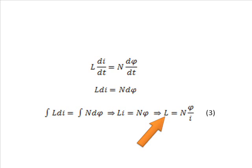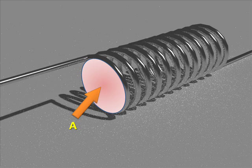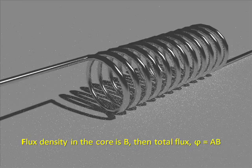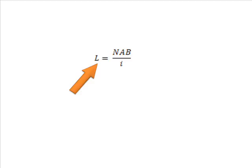A coil which is designed to have a specific value of self inductance is known as an inductor. Now, if cross sectional area of the inductor core is A, and flux density in the core is B, then total flux inside the core of inductor is A into B. Therefore, equation 3 can be written as L equals N into A into B divided by I.